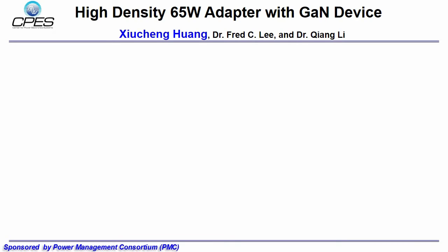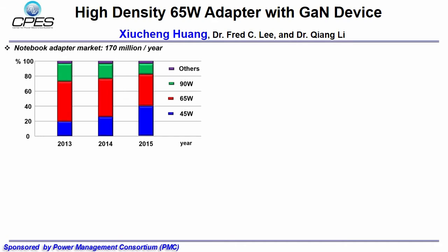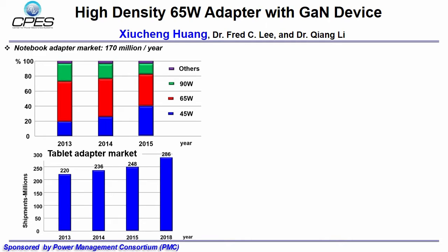As we know, the market for low power adapters is huge. This diagram shows the market information of recent years for low power adapters for notebooks. We can see that adapters below 65W occupy about 80% of the total volume. Another growing market is the tablet or 2-in-1 tablet, with a volume of about 250 million pieces per year and power levels of about 10 to 30W. This market continues growing, attracting more research to develop high density adapters since customers always desire a smaller and lighter one.